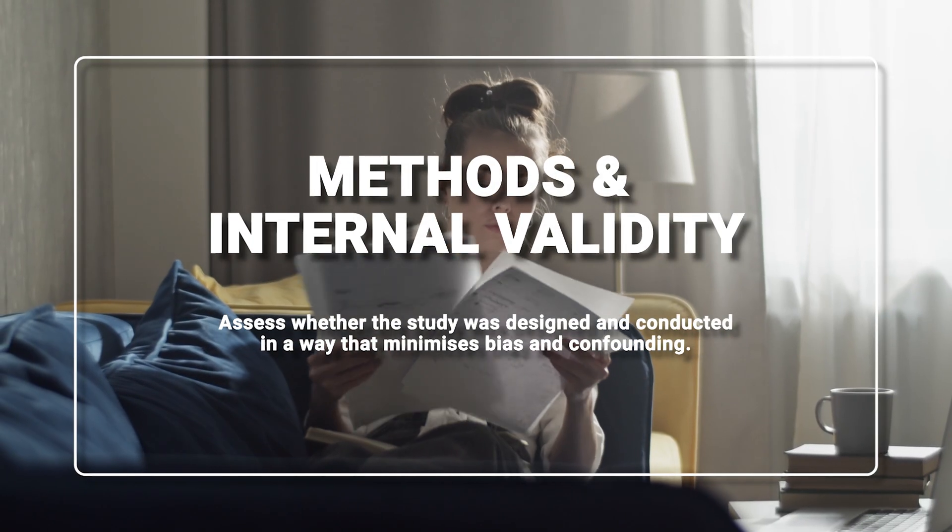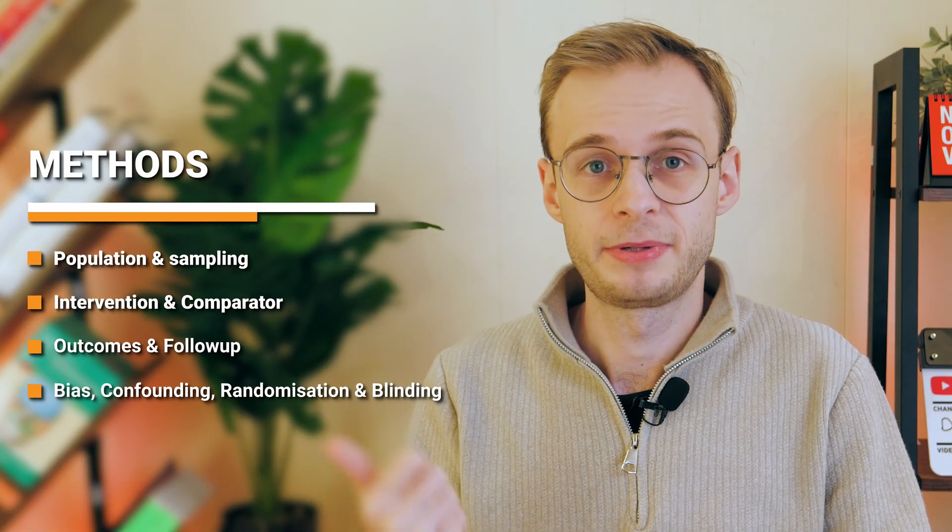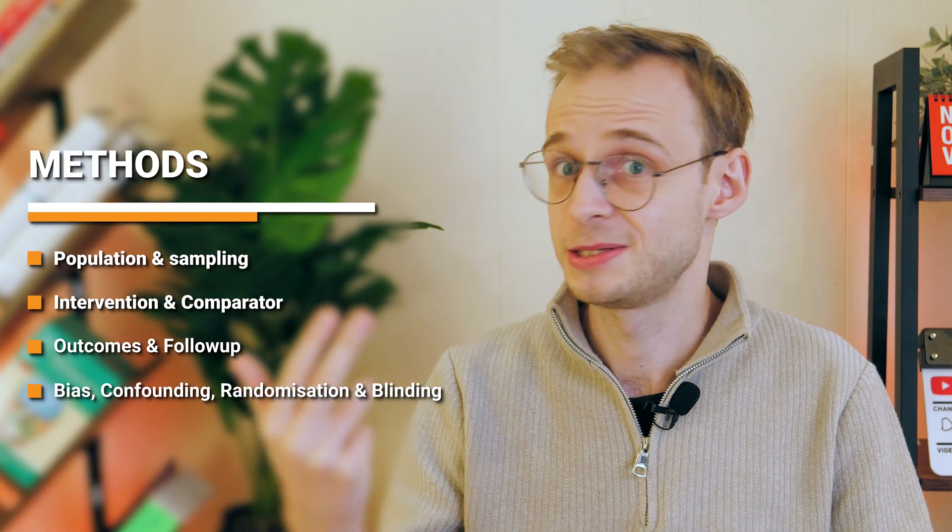Now let's move into methods and internal validity — the core of our appraisal. I break this down into four mini-steps: population and sampling; intervention and comparator; outcomes and follow-up; and bias, confounding, randomisation, and blinding. For population and sampling: are the inclusion and exclusion criteria defined? How were participants identified and recruited? Are these patients representative of the population I care about? And in comparative studies, are the groups similar at baseline in their key prognostic variables?